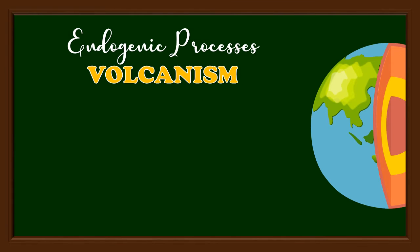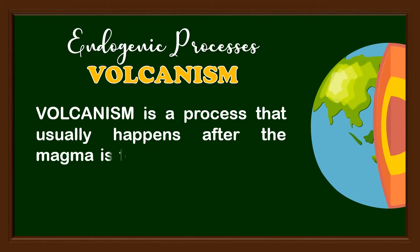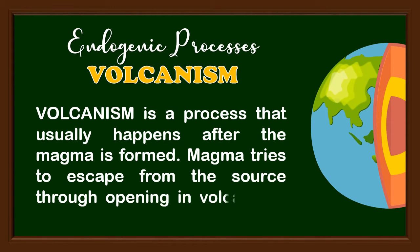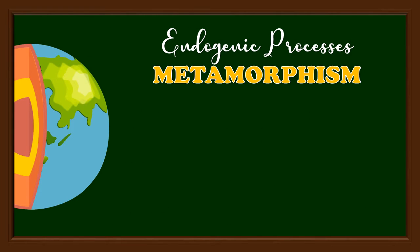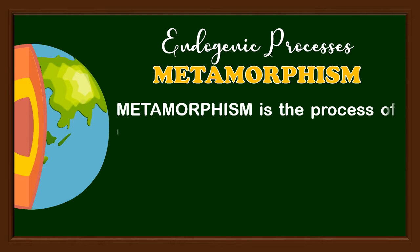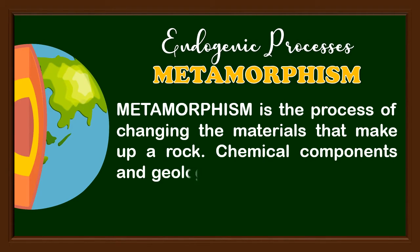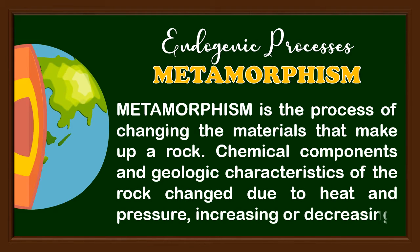Second is volcanism, a process that usually happens after the magma is formed. Magma tries to escape from the source through openings in a volcano or existing cracks on the ground. Third is metamorphism, the process of changing the materials that make up a rock. The chemical components and geologic characteristics of the rock change due to heat and pressure increasing or decreasing.